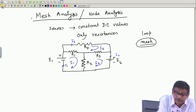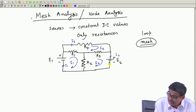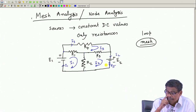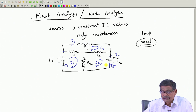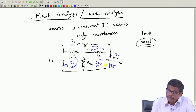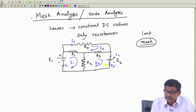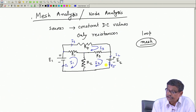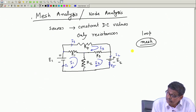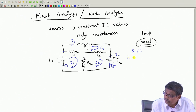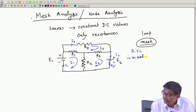I will also connect an additional resistance R5 in this network. In mesh analysis you first identify the meshes, then assign clockwise mesh currents I1, I2, I3, and then write KVL for each of the three meshes. Let me write down KVL in mesh 1.